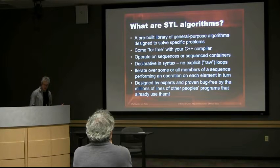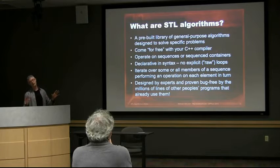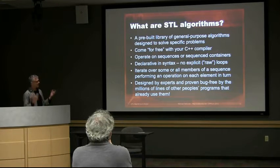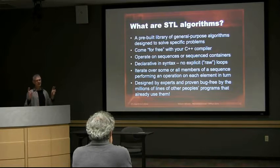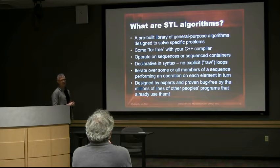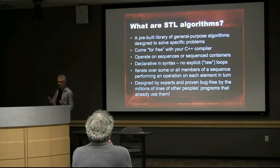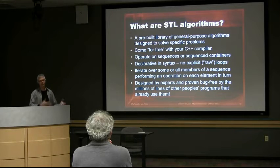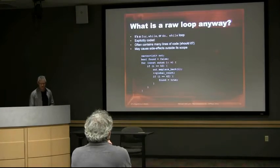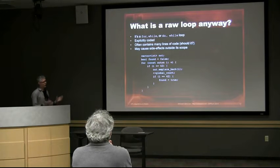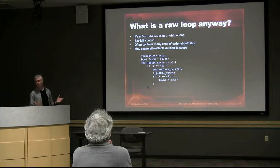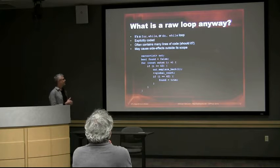STL algorithms are declarative in syntax, so they help you avoid writing explicit raw loops. They iterate over some or all members of a sequence. Like STL, they're designed by experts and proven bug-free as much as can be done — verified by millions of lines of code out there. That means you don't have to debug the algorithm, you just have to debug what you're doing with it. So what is a raw loop anyway?